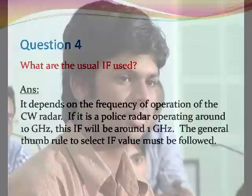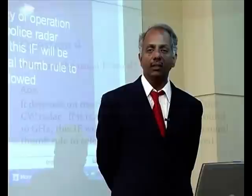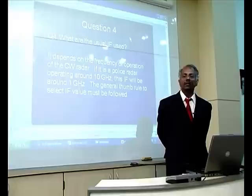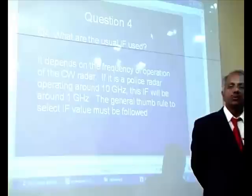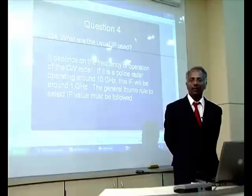Q: What are the usual IF values used? The IF is chosen so that the image frequency is definitely out of the operating range — a standard rule in communication engineering applied to radar as well. For a 10 GHz radar, the IF is normally chosen around 1 GHz — one tenth of the RF input. In general it will be in the range of one third to one fifth depending on the application.